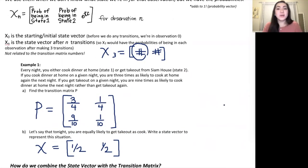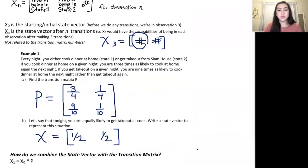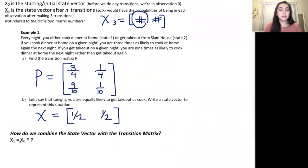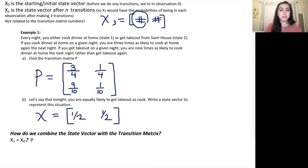Now that we know how to make a state vector, we'll look at how to combine it with the transition matrix to answer more complicated problems. If we already have an initial state vector x0 and want to know what happens next, x1 is the next observation. To figure that out, you take the initial state vector and multiply it by the transition matrix P, which gives you x1 — because between x0 and x1 there is one transition happening.